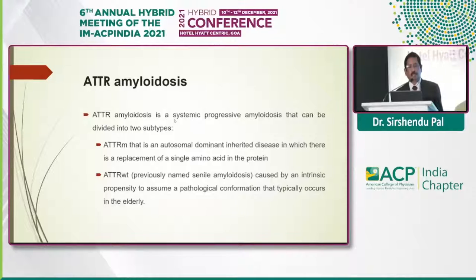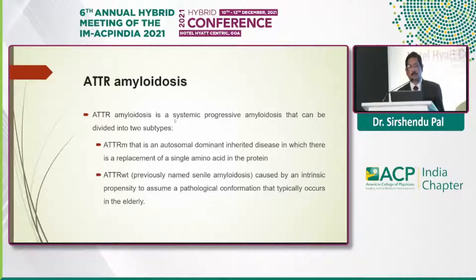Coming to ATTR amyloidosis: it is a systemic progressive amyloidosis divided into two subtypes. ATTRm, the mutant type, is an autosomal dominant hereditary disease with replacement of a single amino acid in the protein. ATTRwt, the wild type, previously called senile amyloidosis, is caused by an intrinsic propensity to assume a pathological conformation, typically occurring in the elderly.